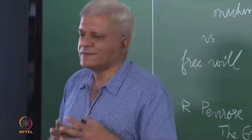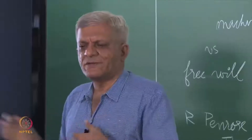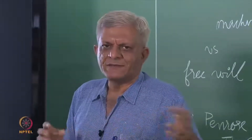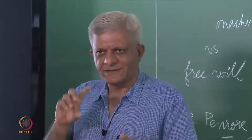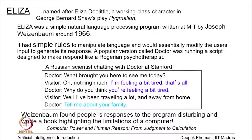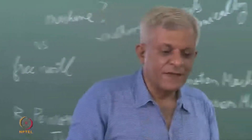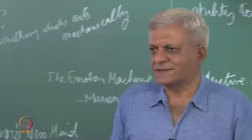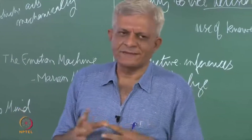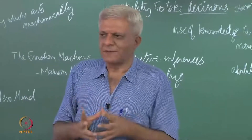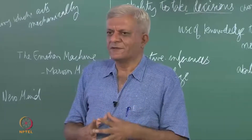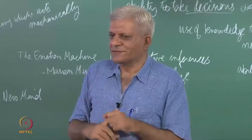For example, if you say 'I like bananas,' the program would simply say 'Why do you like bananas?' — it just twists the sentence and sends it back. There is a popular version called Doctor, which runs a script making it look like a psychotherapist. That of course makes it easy to ask questions. One of the standard fallback responses is 'Tell me more about your family' — and as a human being you might think, 'Oh, this program is doing some deep analysis.'